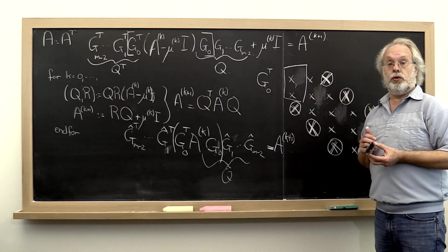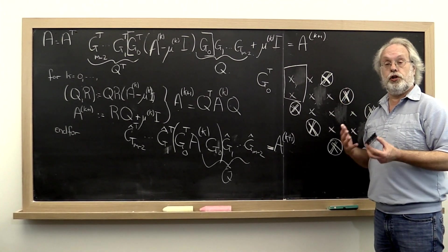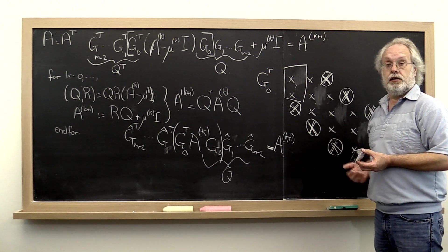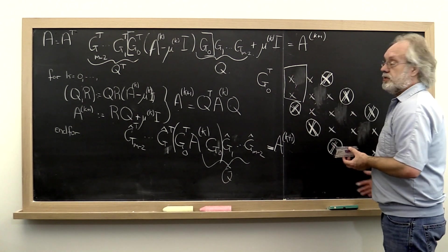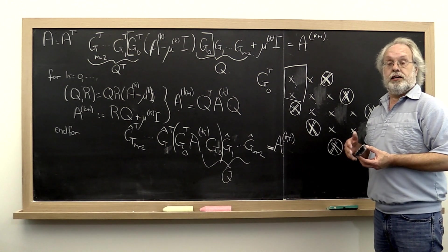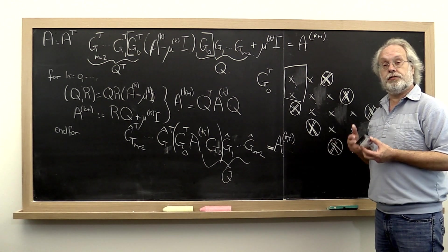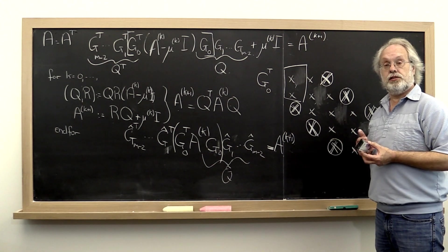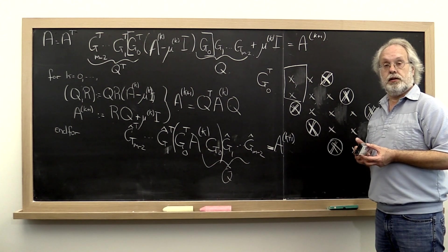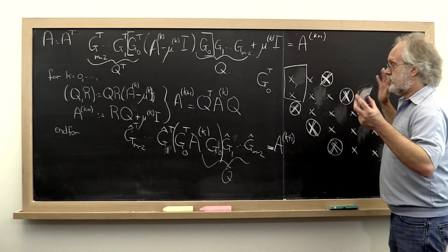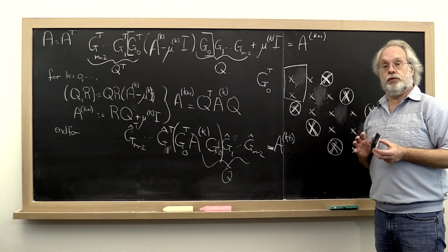This is called the implicitly shifted QR algorithm, if you keep iterating like this. And one step like this is known as the Francis implicit QR step, named after a man named Francis who discovered the algorithm. And this is just a stunningly beautiful result.